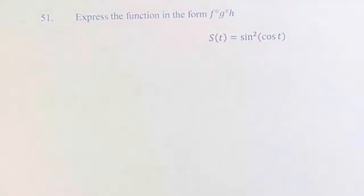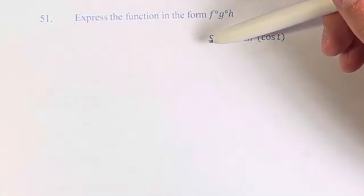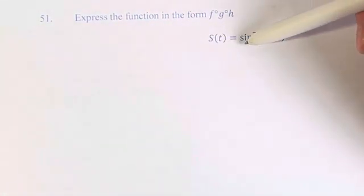Hello, and welcome back to another video. In this problem, we're looking to express the function in the form f of g of h, where the function s of t is equal to sine squared of cosine of t.